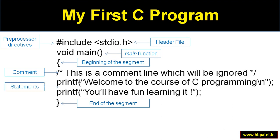The 'printf' statement is related to standard output, meaning the monitor. Anything written between the parentheses in double quotes will be printed on the monitor. For example, writing 'Welcome to the course of C programming' prints that string. '\n' means newline — from that point, the next output goes to the next line. For example, the next statement 'You'll have fun learning it' will be printed on the second line. Semicolons at the end of statements are terminating indicators marking the end of each statement.